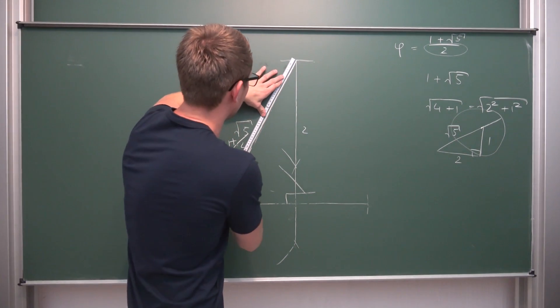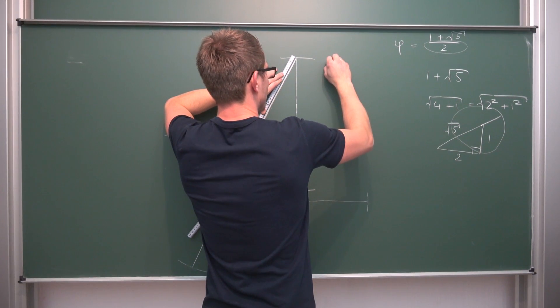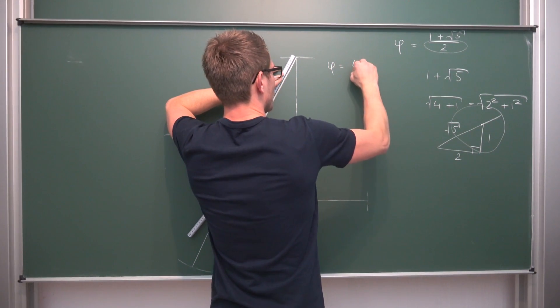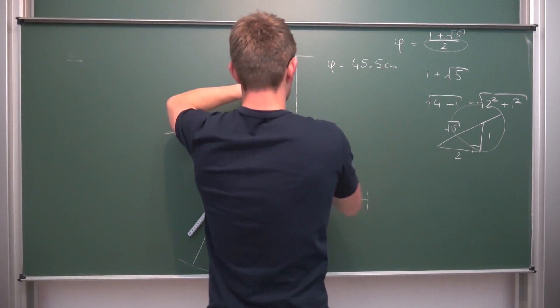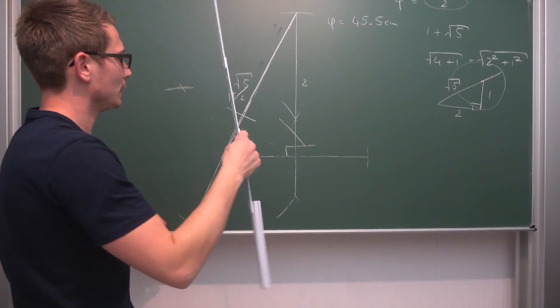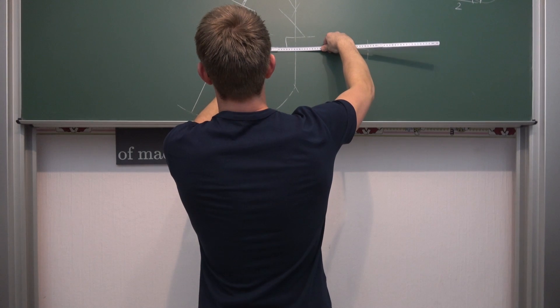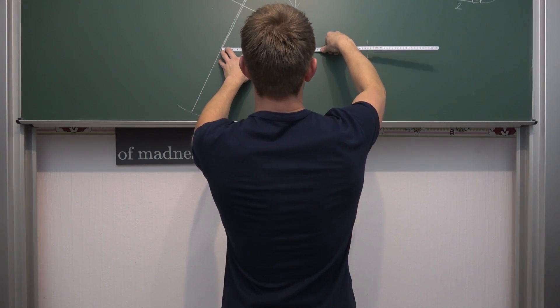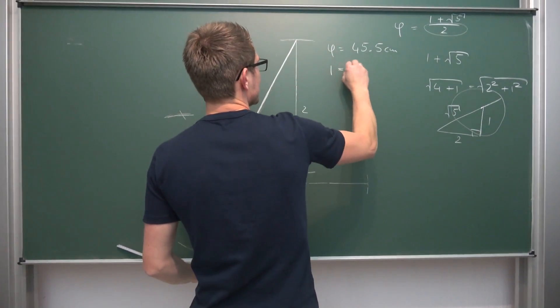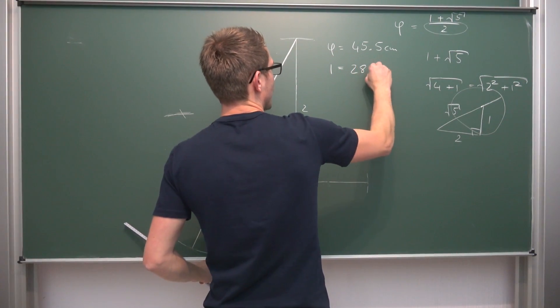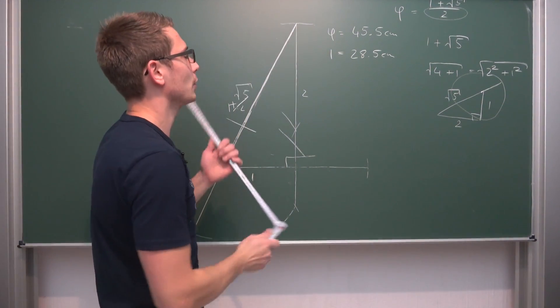This is 45.5 centimeters. So phi is equal to 45.5 centimeters. But if we take a look at our unit length, our unit length is 28.5 centimeters.